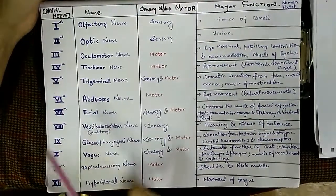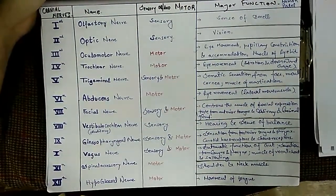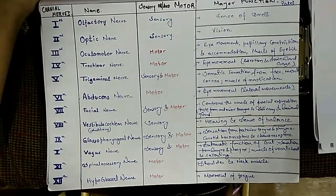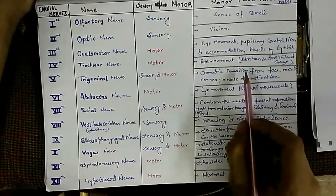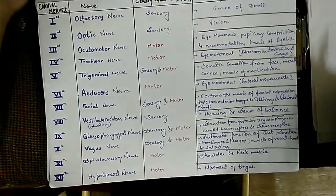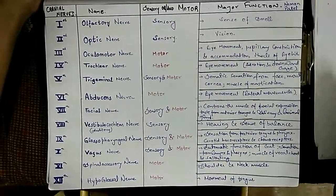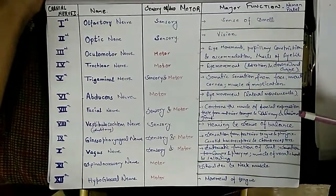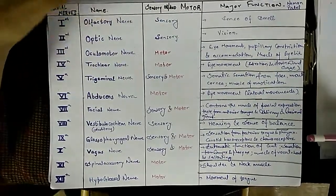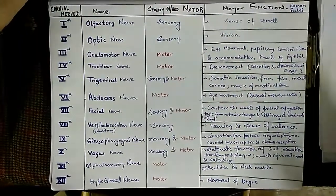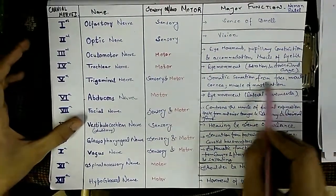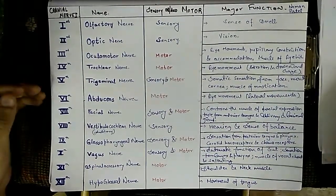The fifth cranial nerve is the trigeminal nerve. It contains both sensory and motor parts. It governs somatic sensation from the face, mouth, and cornea, and also controls the muscles of mastication — the muscles responsible for chewing food.